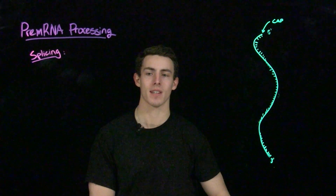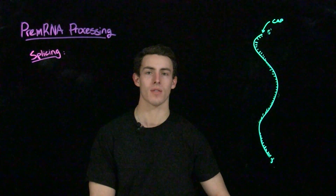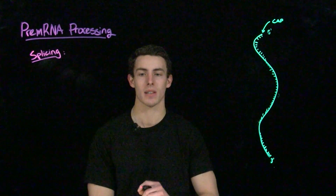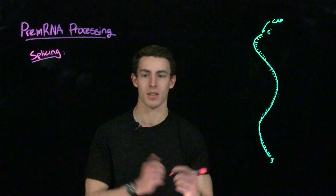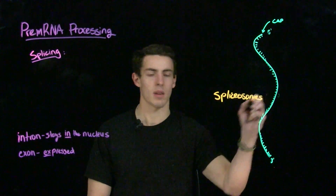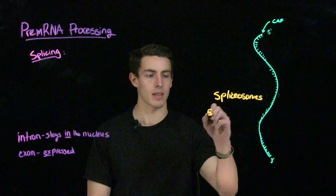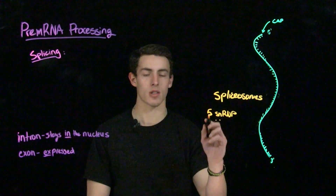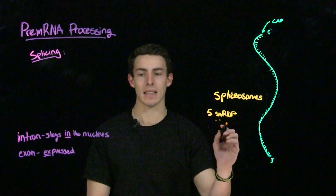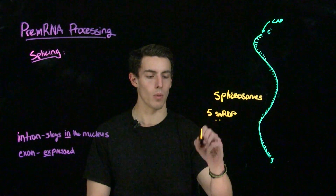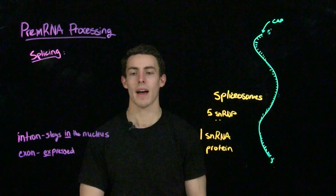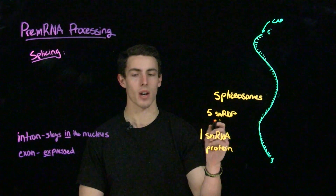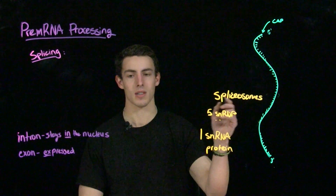The next part of pre-mRNA processing is RNA splicing. RNA splicing is going to do two things: it's going to remove introns, which are sections of mRNA that only stay inside the nucleus — thus we call them introns — and it's going to ligate together exons, and exons are expressed. Splicing is carried out by spliceosomes, and spliceosomes are made of five SNRNPs. An SNRNP stands for a small nuclear ribonucleoprotein, and each SNRNP is made up of one snRNA, or small nuclear RNA, and a bunch of proteins.